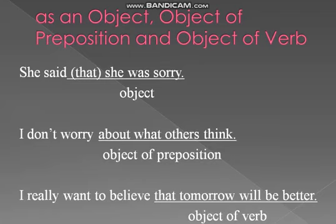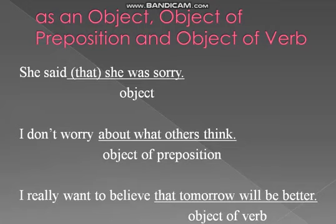'I really want to believe that tomorrow will be better.' Here 'that tomorrow will be better' is a noun clause used as an object of the verb. It is modifying the verb 'believe' — an infinitive 'to believe.' In the previous example, 'about' is a preposition, which is why that clause is called an object of preposition.